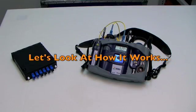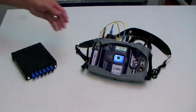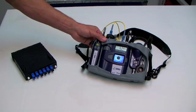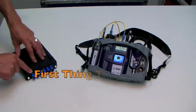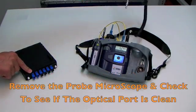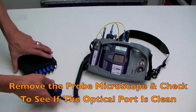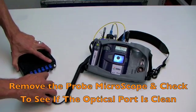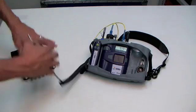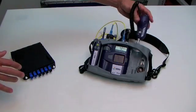Now let's look at how this essential fiber cleaning kit works. If a technician is using this kit to go out in the fiber plant and check light levels or loss on an optical channel, the first thing they're going to do is remove the probe microscope, plug it into the optical port, and check to see if that port is clean. This port isn't clean, so the technician's going to want to clean it before he plugs his test lead into it.